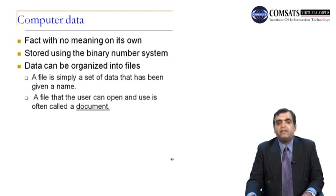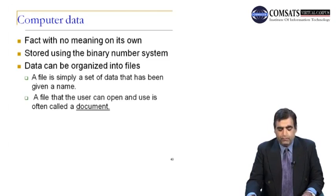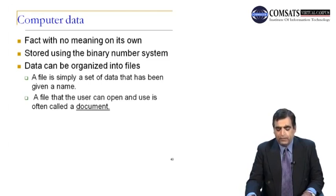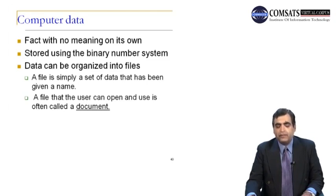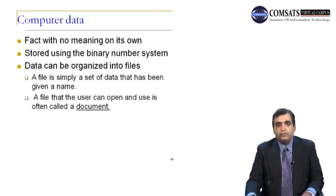A file that the user can open and use is often called a data file or document. Although many people think of documents simply as text, a computer document can include many kinds of data — for example, a text file such as a letter, a group of numbers such as a budget, a video clip which includes images and sound, or any combination of these items. Programs are also organized in files, and these files contain the instructions and data that a program needs in order to run and perform tasks.